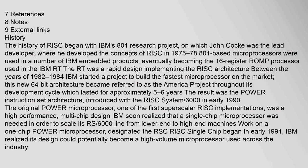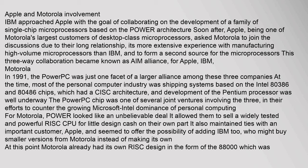IBM approached Apple with the goal of collaborating on the development of a family of single-chip microprocessors based on the Power architecture. Apple, being one of Motorola's largest customers of desktop-class microprocessors, asked Motorola to join the discussions due to their long relationship, its more extensive experience with manufacturing high-volume microprocessors than IBM, and to form a second source for the microprocessors. This three-way collaboration became known as the AIM Alliance, for Apple, IBM, and Motorola, in 1991.